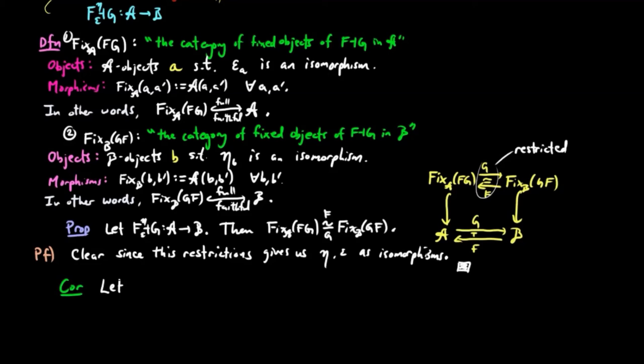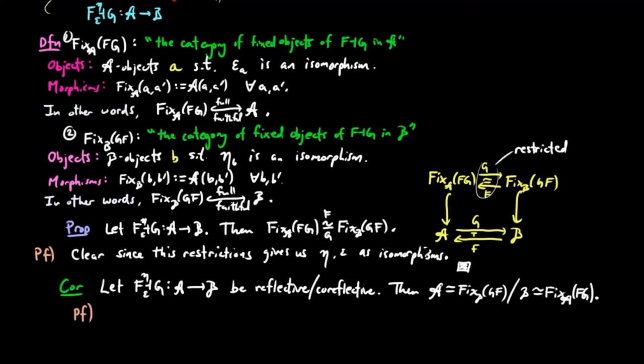Then, as a corollary, we let FG be reflective, respectively co-reflective. Then A is equivalent to the category of fixed objects in B, and respectively, B is equivalent to the fixed objects in A. This holds since if FG is reflective, epsilon is already an isomorphism, and so the fixed objects in A of FG is equal to the category A.